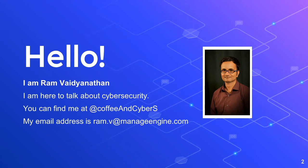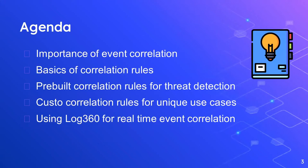Here's the agenda for today. We'll start by talking about the importance of correlating events from across your network. We'll then learn about correlation rules and how they work, look at pre-built correlation rules and how they help detect threats, and then look at custom correlation rules for unique use cases. Throughout the webinar, I'll also show you how ManageEngine Log360 — a comprehensive SIEM solution — can be used for effective real-time event correlation.